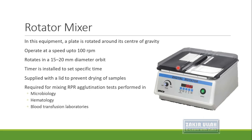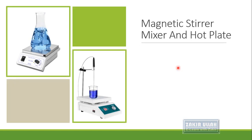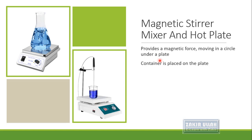The rotator mixer is required for mixing of different agglutination tests performed in microbiology, hematology, blood transfusion, or research laboratories. Next is the magnetic stirrer mixer and hot plate mixer. These mixers provide magnetic force moving in a circular direction under a hot plate. The container is placed on the plate, which is usually hot.